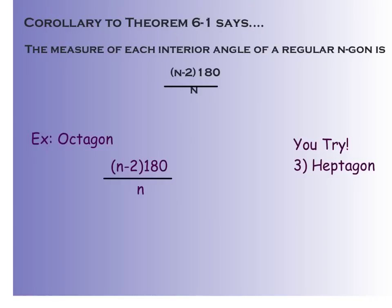There's also a corollary to that theorem. The measure of each interior angle of a regular n-gon is (n minus 2) times 180, divided by n. So we're looking for just one angle, not all of them. We already know n minus 2 times 180 gives us the total. Now we divide by the number of sides, which is also the number of angles. Very importantly, I must have a regular n-gon — meaning equilateral and equiangular — because if it's not regular, all the angles might be different.